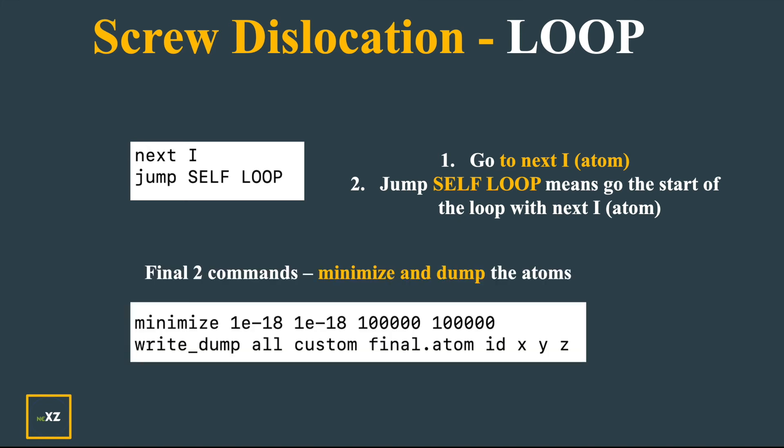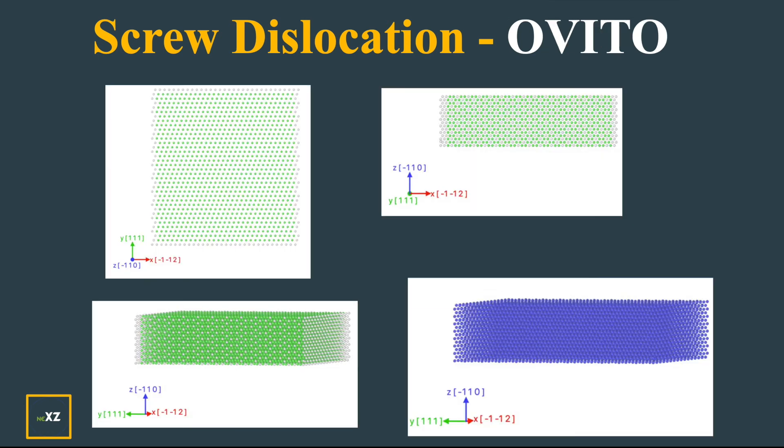Finally I do minimization to relax. This is a zero degree Kelvin relaxation. And I dump all the files into final.atom. My custom file has id, x, y, z - you can also give potential energy and stress per atom. Let's see how it looks. After displacing you can see that it looks like this.